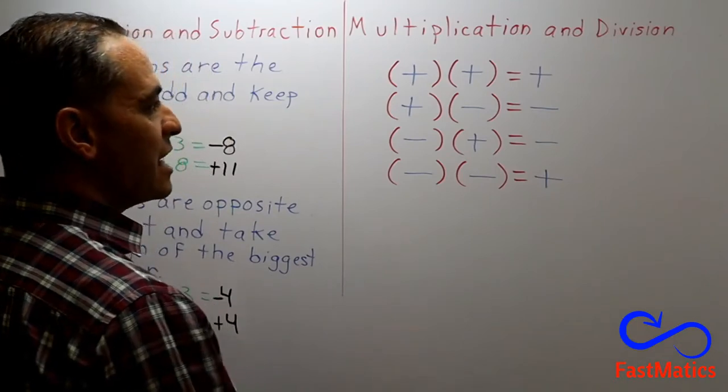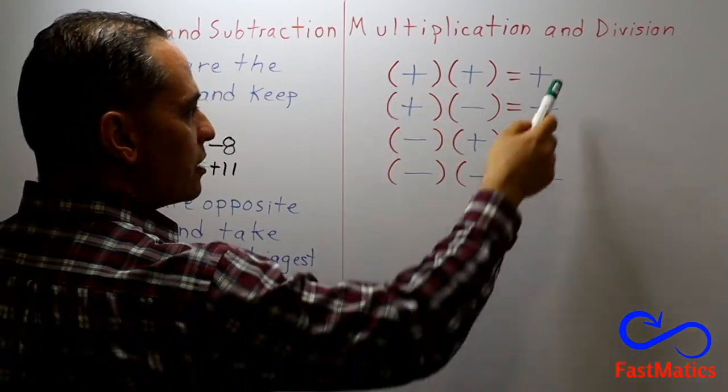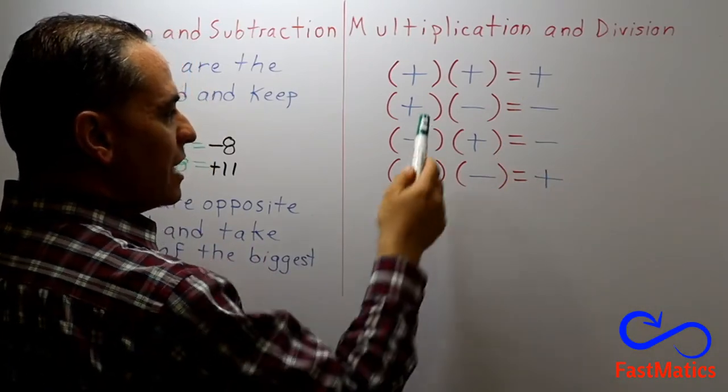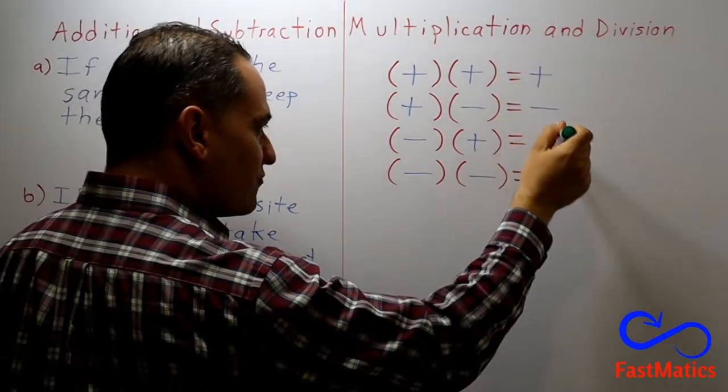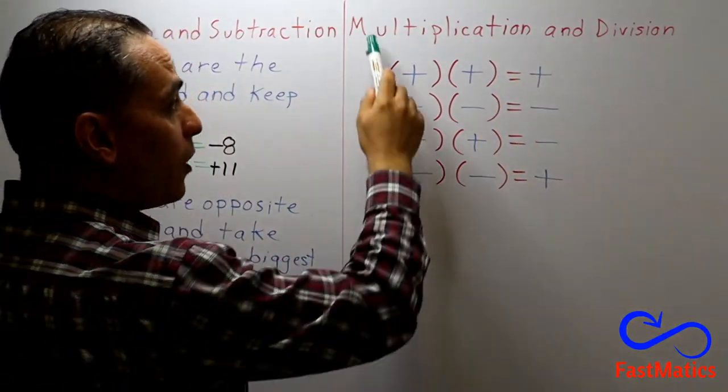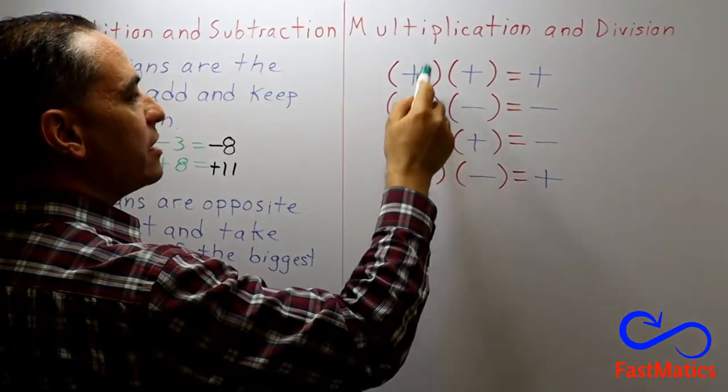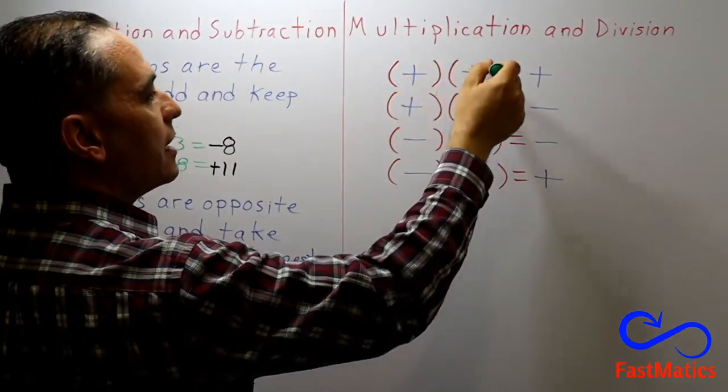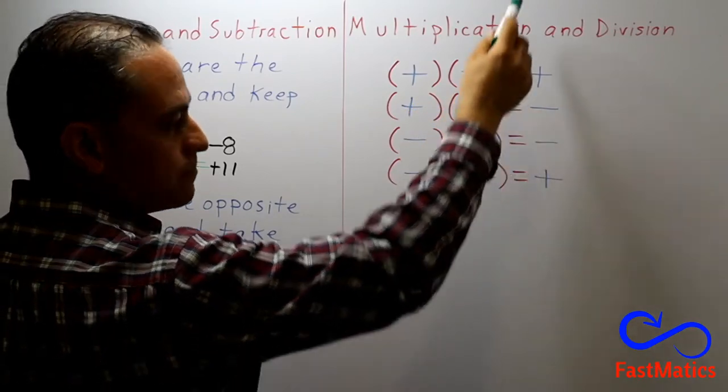That means if you have the same sign, you are going to write a positive sign. But if you have different signs, you are going to write a negative sign. For multiplication and division, it is the same.